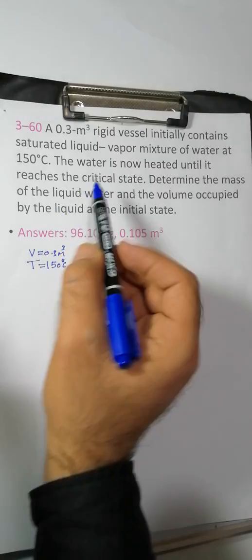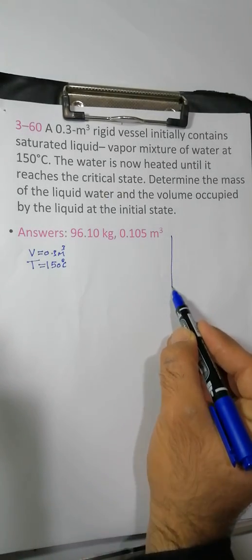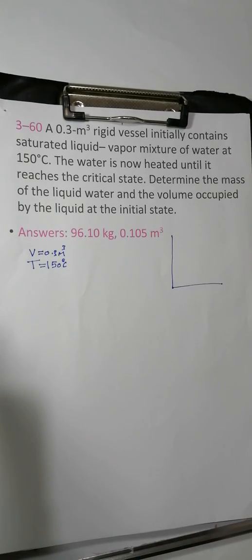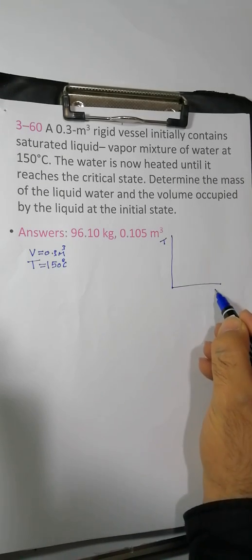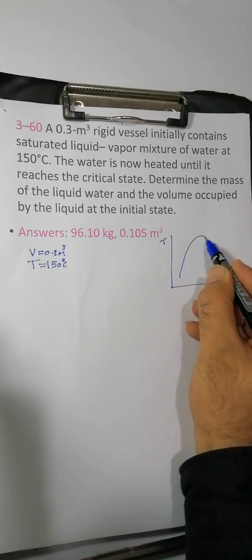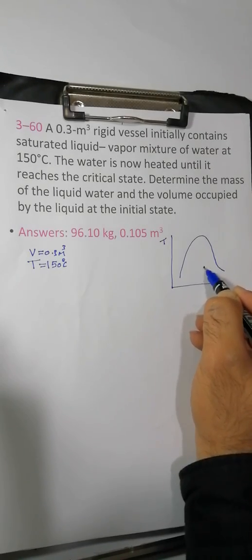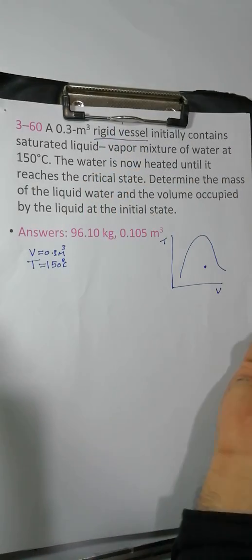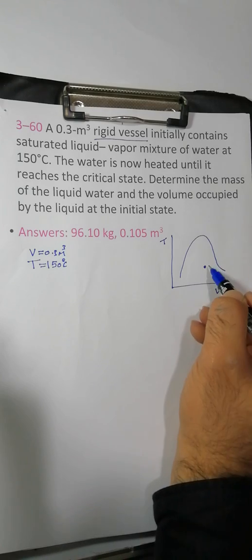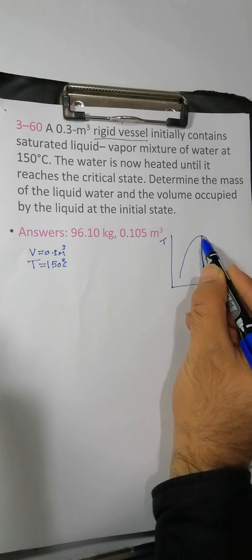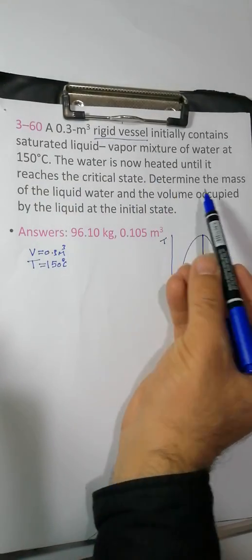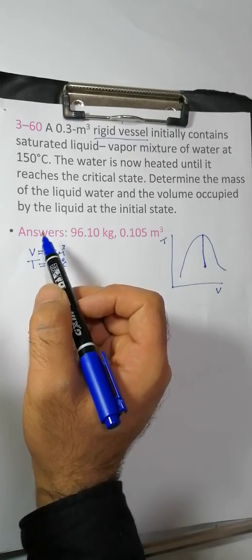The water is now heated until it reaches the critical state. The mixture is in a rigid vessel. Determine the mass of the liquid water and the volume occupied by the liquid at the initial state.